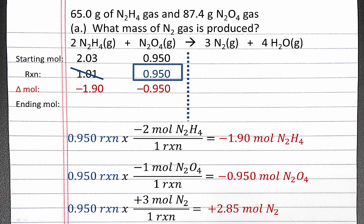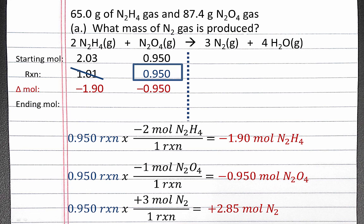And for our product, with 0.95 reactions, each reaction produces 3 moles of N2, so we'll produce 2.85 moles of N2, giving us a positive change for our product. Since our problem doesn't ask us about H2O gas, we don't need to calculate the change in moles for it.